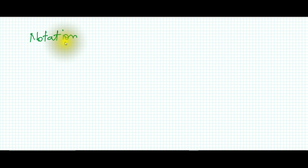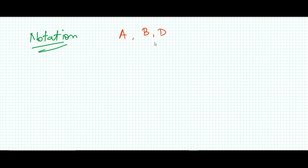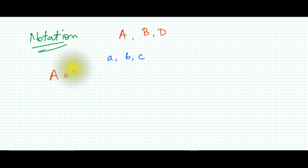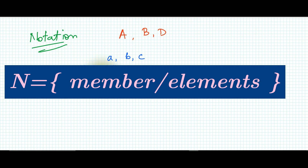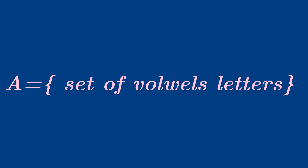Usually sets are represented with capital letters like A, B, D and so on. The members or elements of a set are represented with small letters like a, b, c. A set can be represented with a capital letter and curly brackets containing the members or elements, for example A = {A, E, I, O, U}.